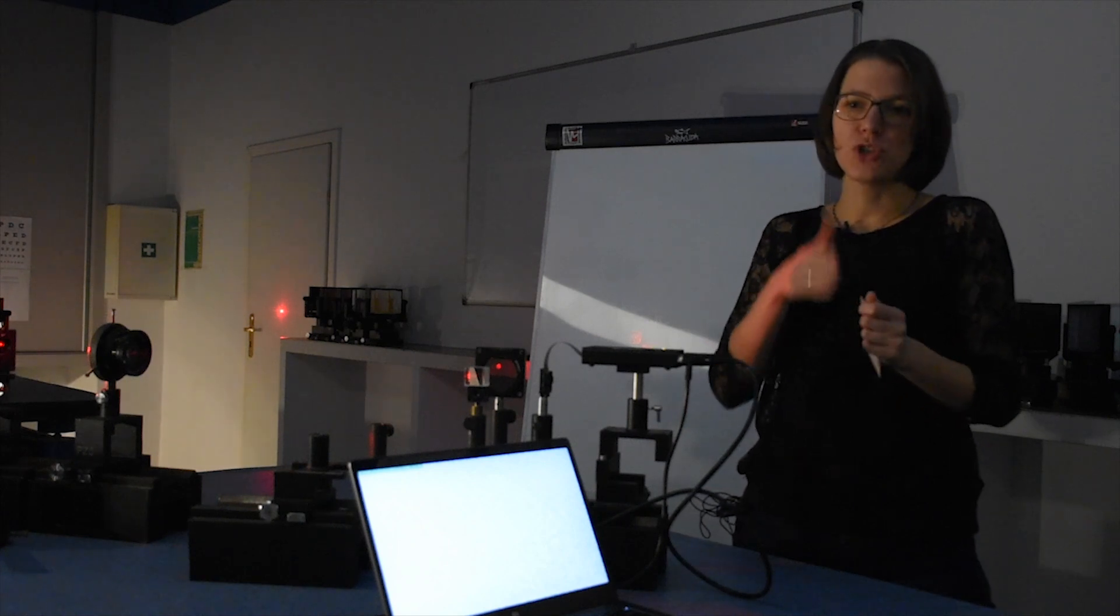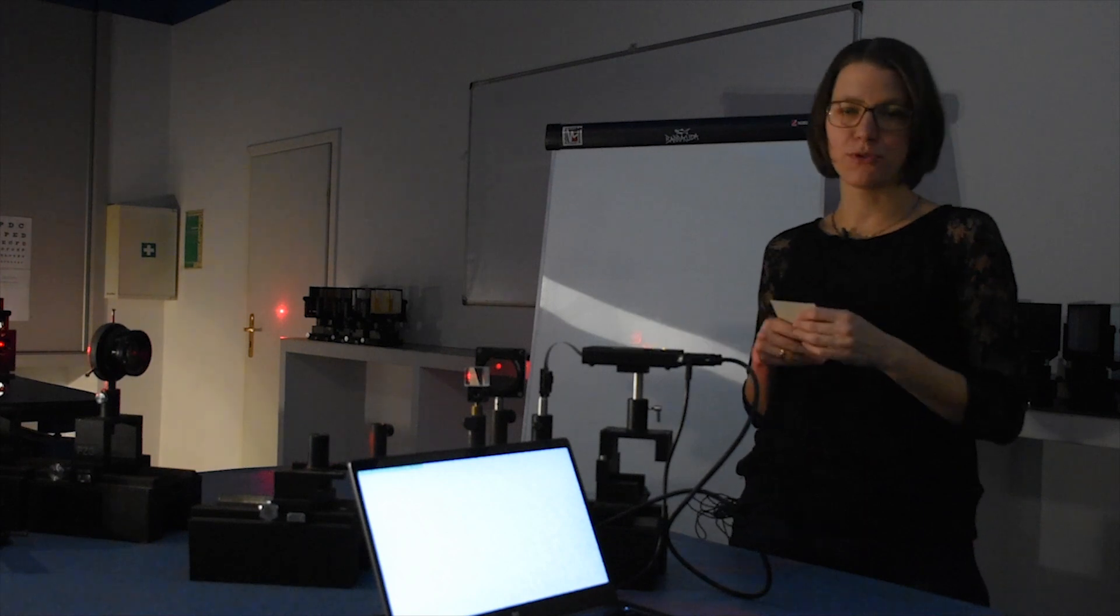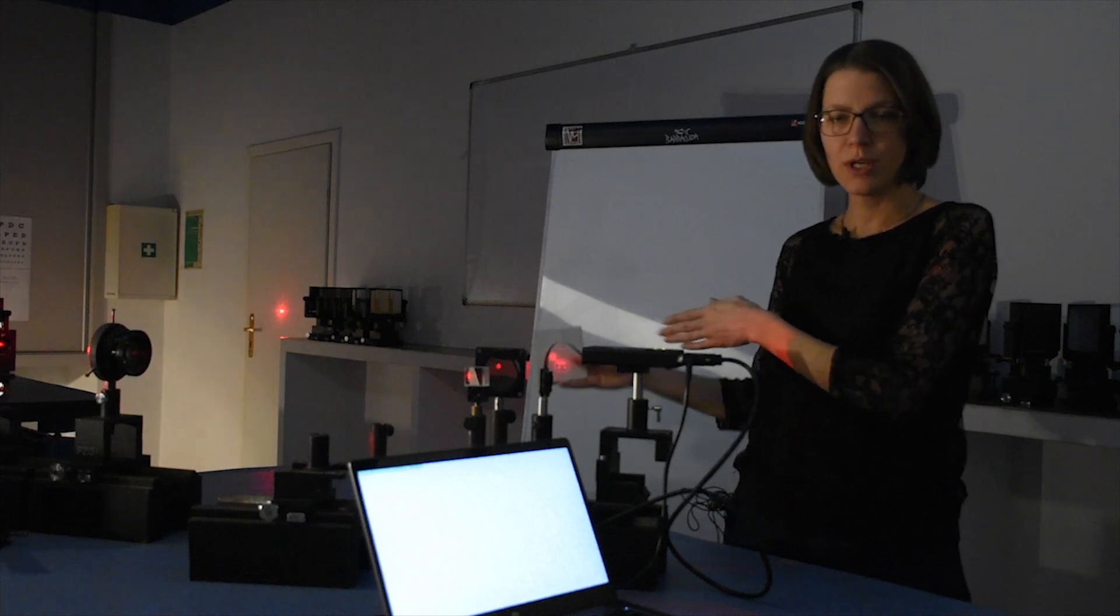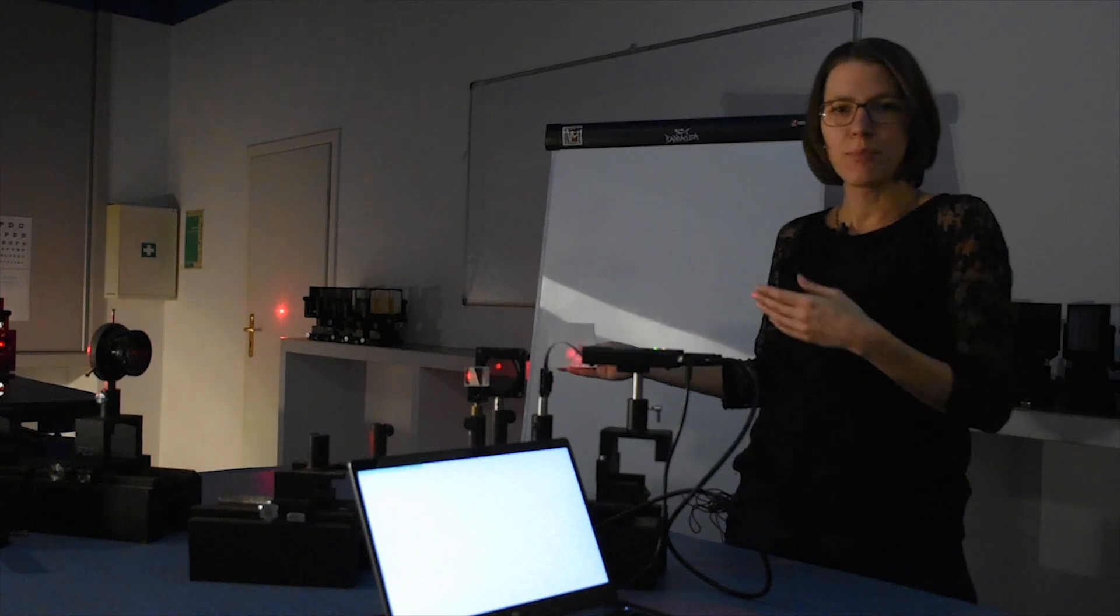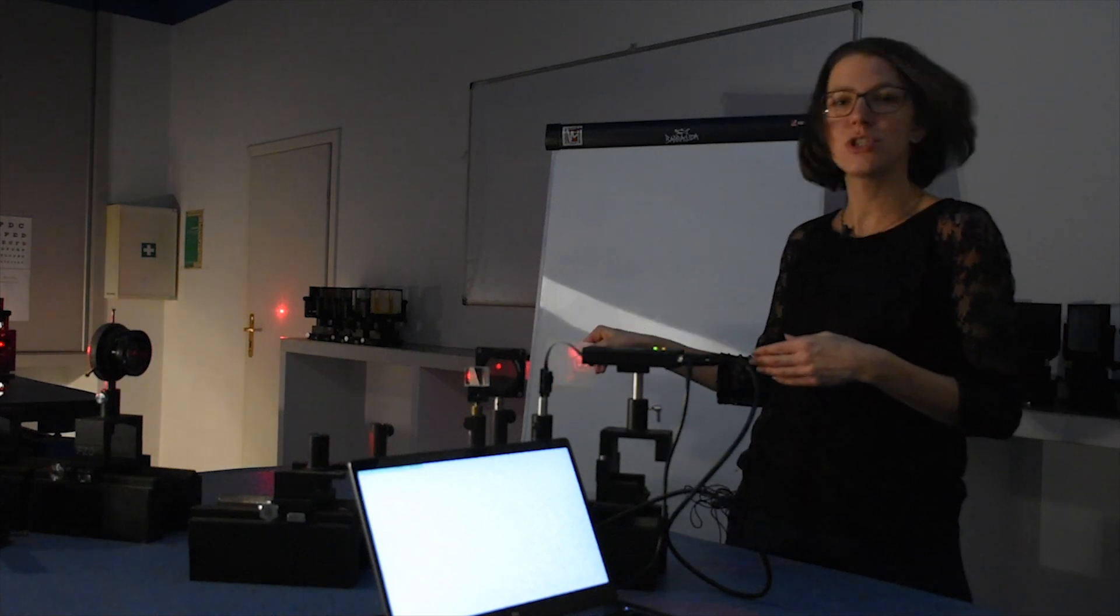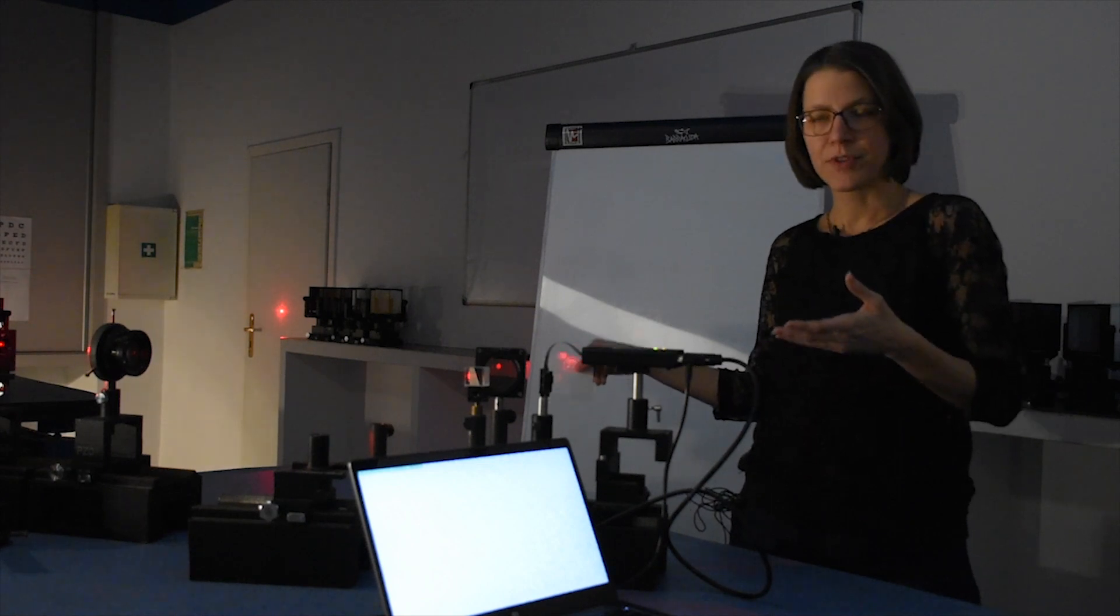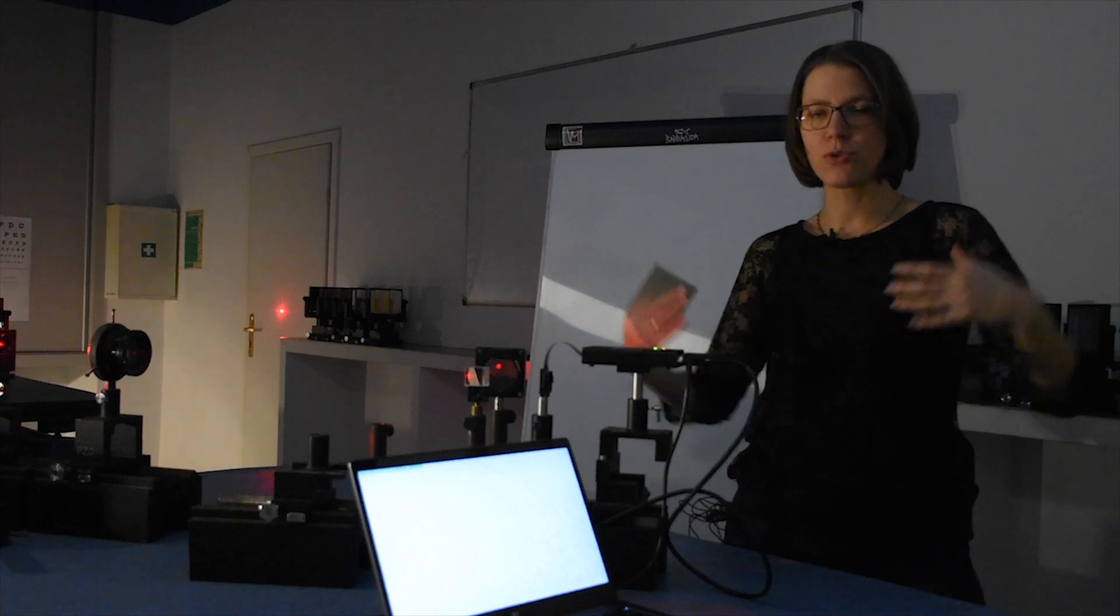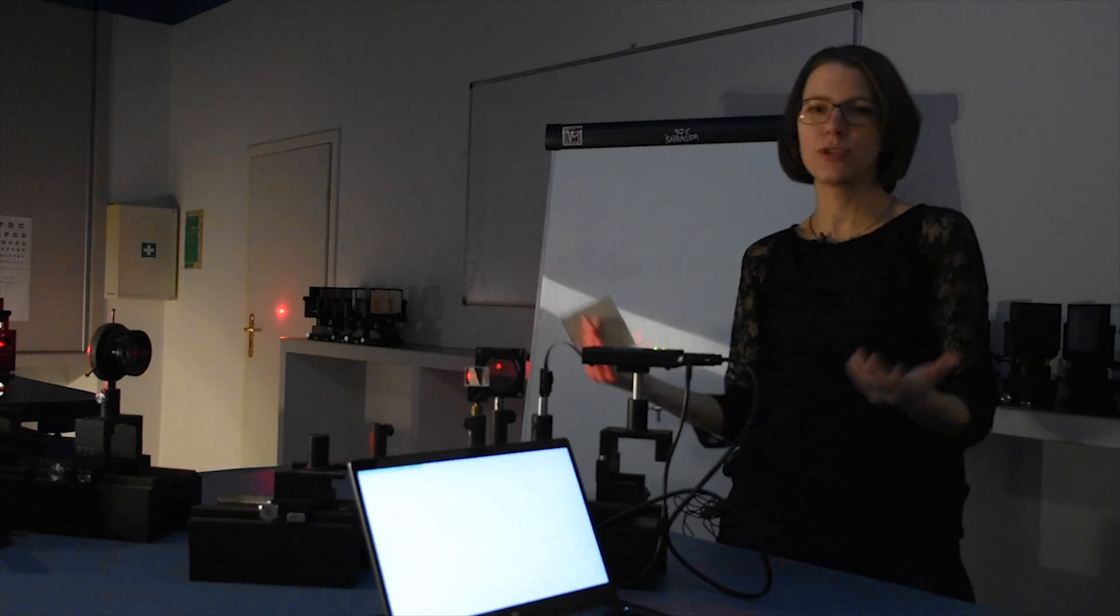Możemy stworzyć ileś dwuwymiarowych obrazów, żeby stworzyły nam wrażenie trójwymiarowości, ale to nigdy nie będzie taki idealny trójwymiarowy obraz, który nam gdzieś powstanie. Tutaj występuje dokładnie ten sam problem, że ja mogę mieć obraz na jakiejś jednej konkretnej odległości, na jakiejś innej, ale pomiędzy będę miała również jakieś światło, które mi zostaje. Nie będzie tak, że jeżeli mamy postać wyświetloną, to przed i za niczego nie będzie.